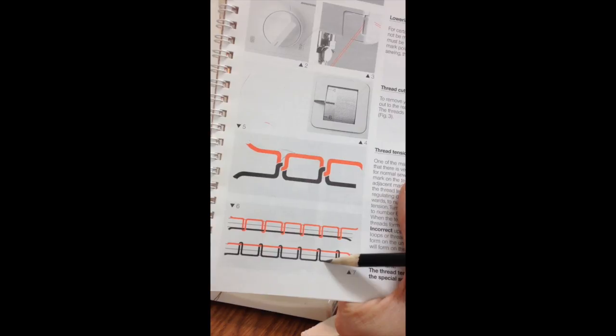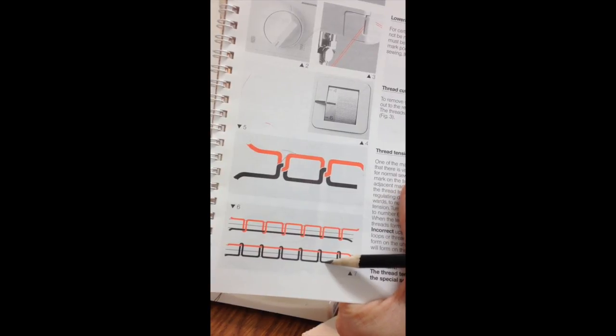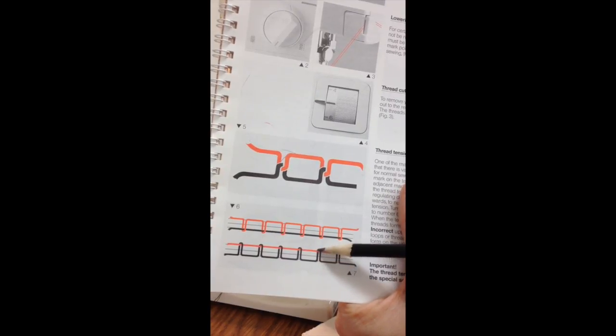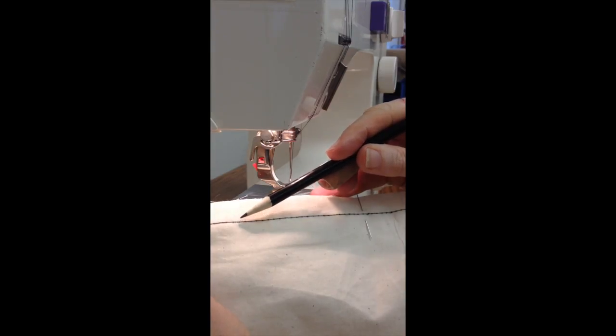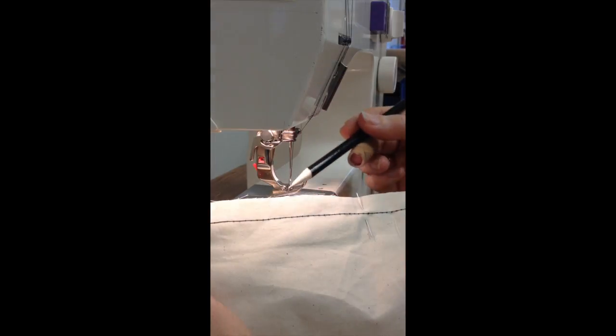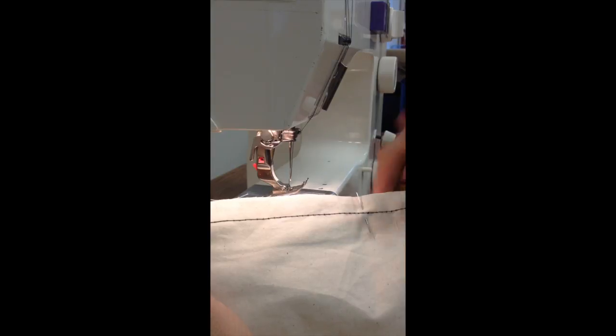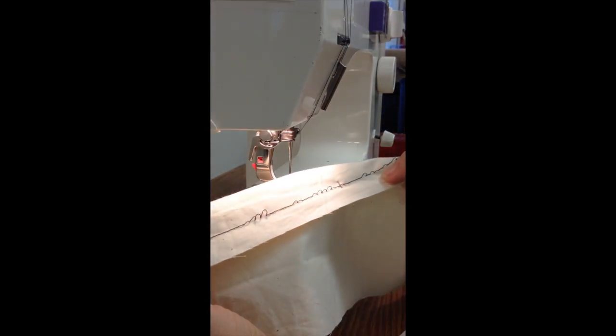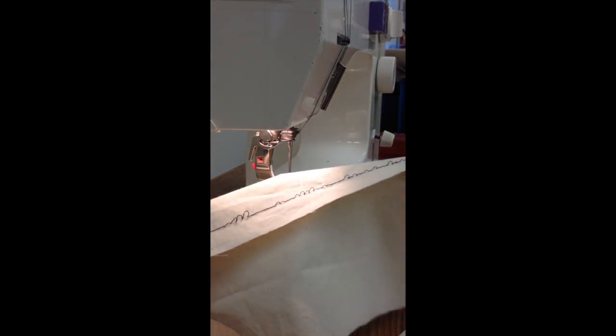This is a diagram of bobbin thread that is too loose and it's going all the way up and showing in bumps on the top of the thread. These bumps are the bottom thread that are too loose and so they're coming up to the top and being loopy underneath. So what do we do to fix that?